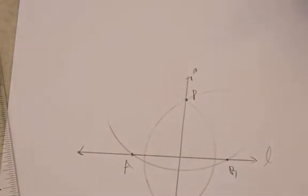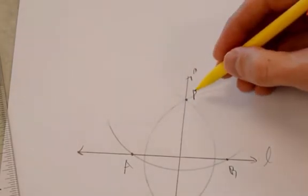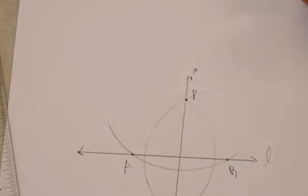But really my goal in the construction was simply to make a perpendicular to line L through a point that's not on line L. And that's how you do it.